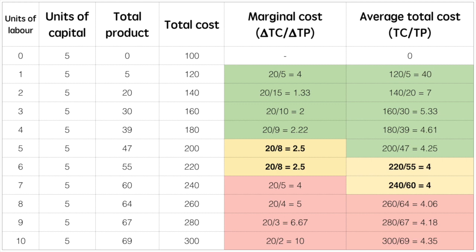Average total cost is a somewhat simpler calculation — you don't need to calculate any changes, just divide the total cost by the total product. Similarly, you should see average cost dropping initially, bottoming out, and then rising. Why it doesn't match marginal cost exactly will be illustrated in the next video. For now, just understand the basic calculation.